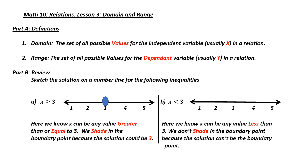Next, we need to identify which way the arrow grows. Since x is greater than 3, we know that x can be any value that is bigger than 3, so I draw my arrow to the right. To test this, I could take one of my points, put it in for x, such as 4, and this would be greater than 3.